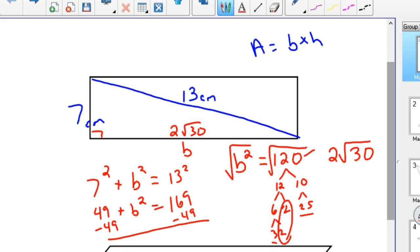So then your area is base times height. In our case it would be 2 root 30 times 7, which would be 14 root 30 centimeters squared.